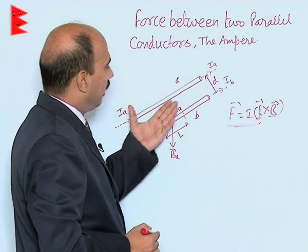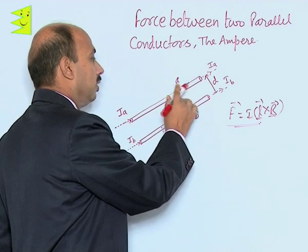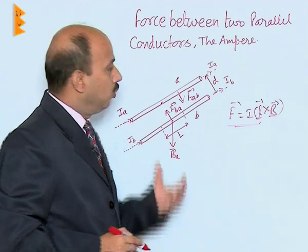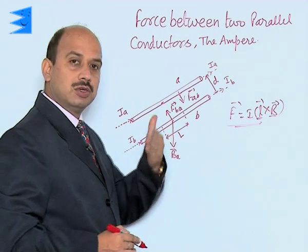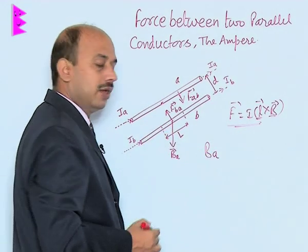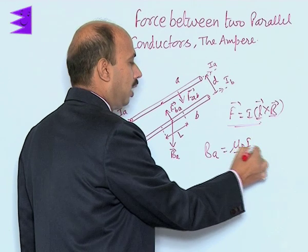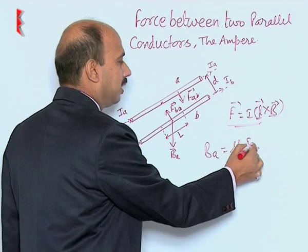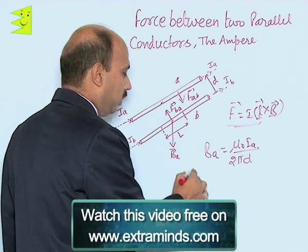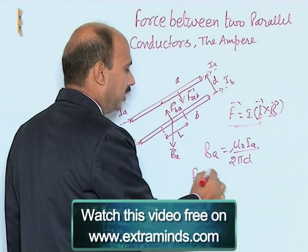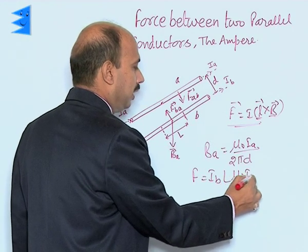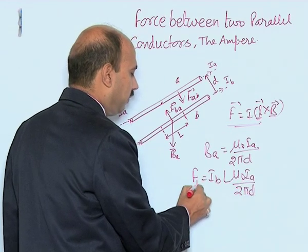Similarly, the force acting on A due to B is directed towards B. For conductor B, the magnetic field due to conductor A is B_A = μ₀ I_A / 2π D, where I_A is the current in conductor A and D is the separation. The force on conductor B of length L — since θ = 90° — is F = I_B · L · B_A = I_B · L · μ₀ I_A / 2π D. This is the force on B due to A.